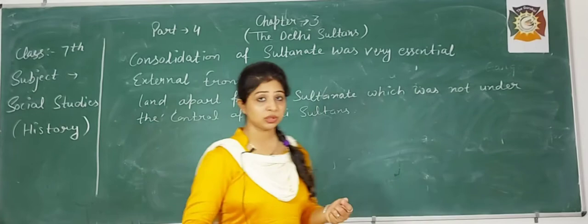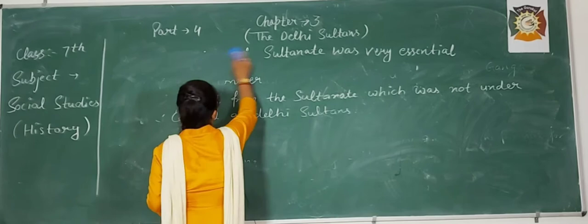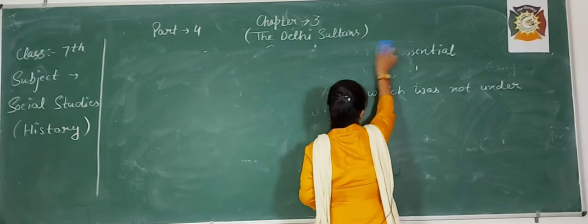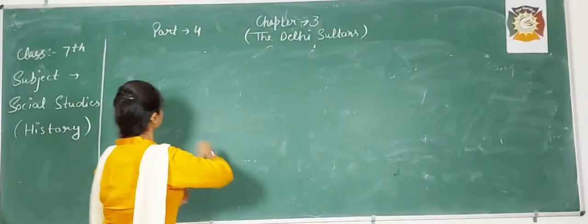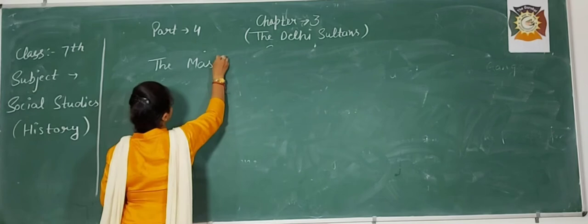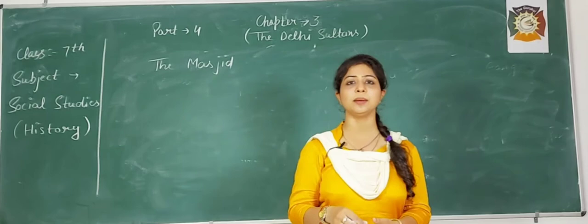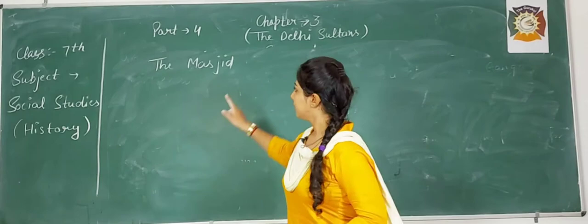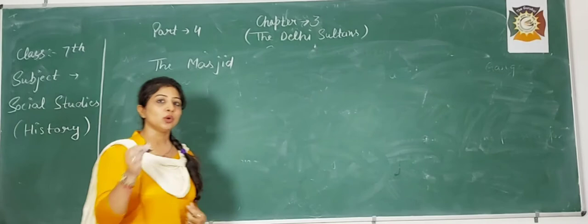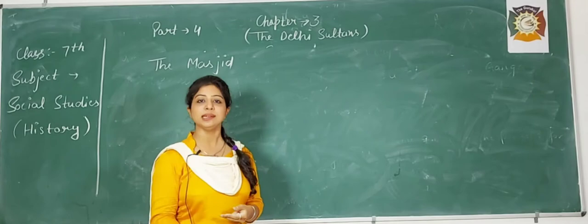This was our internal and external consolidation. The next topic in this chapter is the Masjid. Delhi Sultans were not native rulers — they were foreign rulers. They also introduced their religion here.